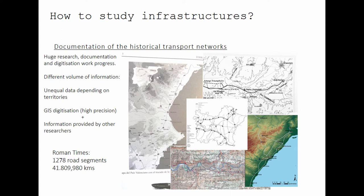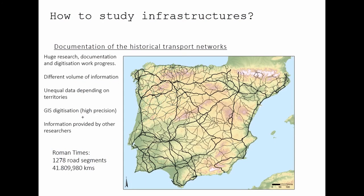We took information from many different kinds of sources, and it's very important to thank the collaboration of other archaeologists who shared their digitized data directly. This is the result of the digitization of all Roman roads in the Iberian Peninsula. As you can see, we know a lot of main roads, but we also have a dense network of secondary roads, and all of the territory is covered without big gaps of information — making this data well-suited for network analysis.